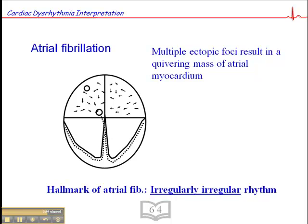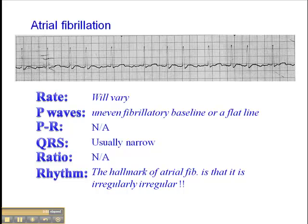The hallmark of atrial fib is that it's an irregularly irregular rhythm. Going back to the previous slide, whether you're dealing with a narrow QRS complex or a wide QRS complex, if the rhythm is irregularly irregular and we don't see discernible P waves, we're likely dealing with an atrial fibrillation.